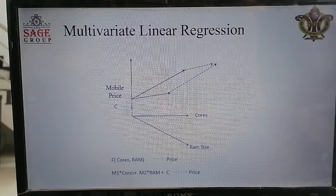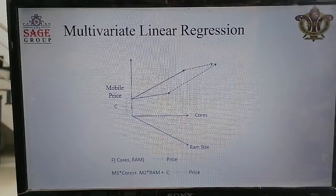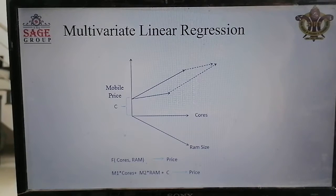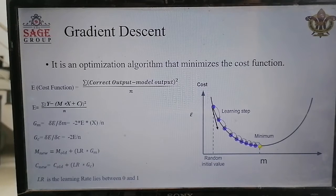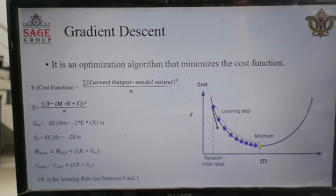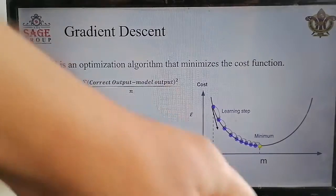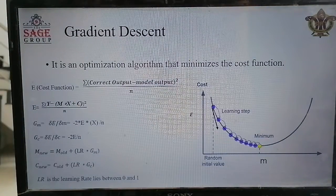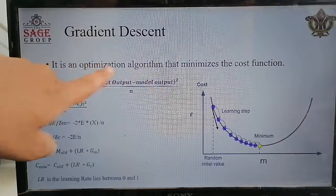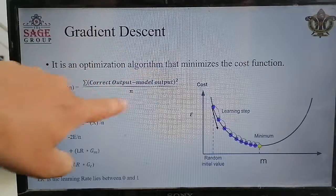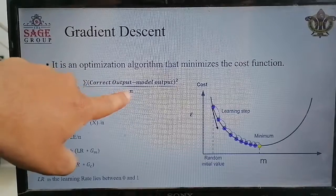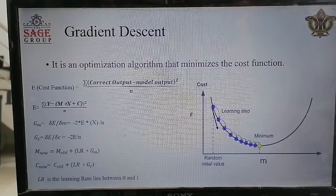The question that arises is how to find out the correct values of M1, M2, and C — these are the model parameters required to be learned through the learning process. To find out the correct values of model parameters, we use the gradient descent optimization technique. The task of the optimization technique is to find out the optimized values of model parameters at which the cost function is minimum. The cost function is the mean square error: the square of (correct output minus model output), summed over all samples and divided by n.